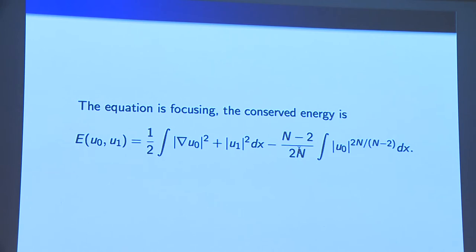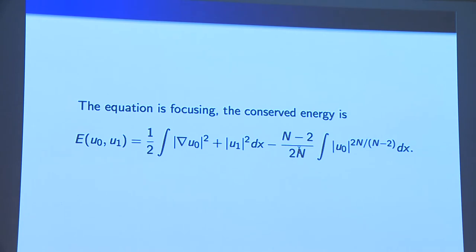Before going on, let's discuss the defocusing equation. In the defocusing critical wave equation, we change the sign in the nonlinearity — instead of minus u to the fifth, we put plus u to the fifth. In that case there is no longer a competition between the linear and nonlinear parts; they cooperate, and the resulting energy has a plus sign. That defocusing equation was studied extensively through the eighties, nineties, and early two-thousands, with important contributions from Struwe, Grillakis, Shatah-Struwe, Kapitansky, Ginibre-Velo-Soffer, Bahouri-Gérard, and Bahouri-Shatah.